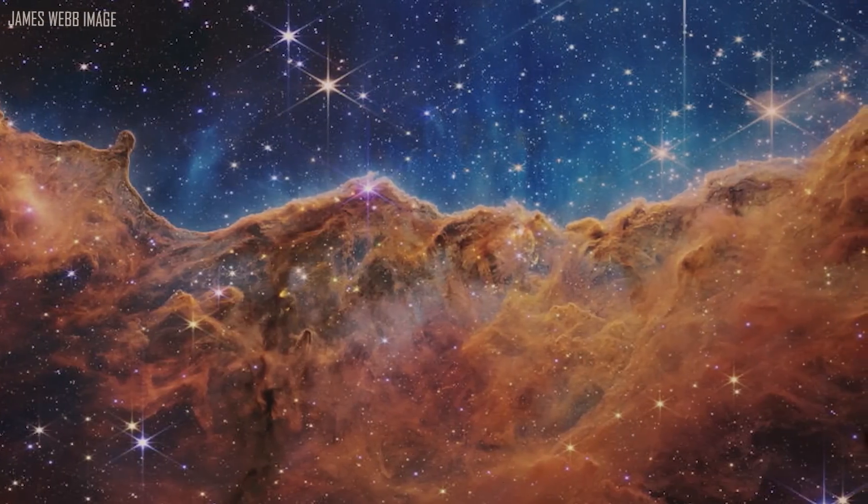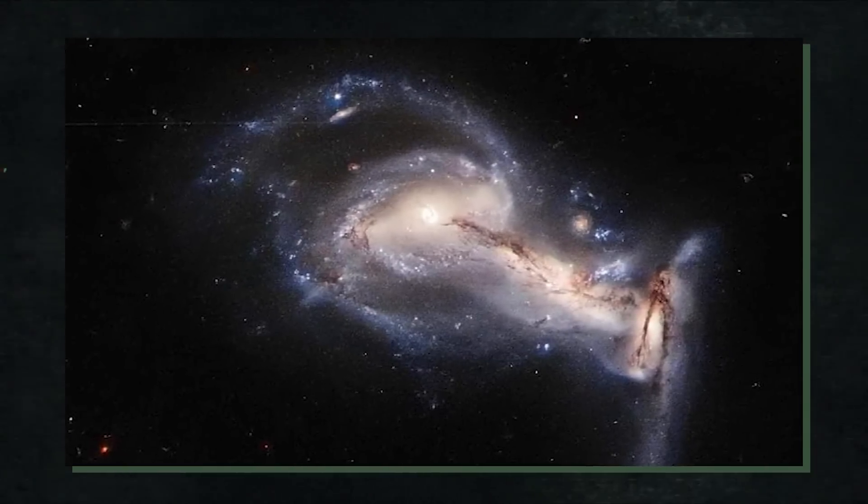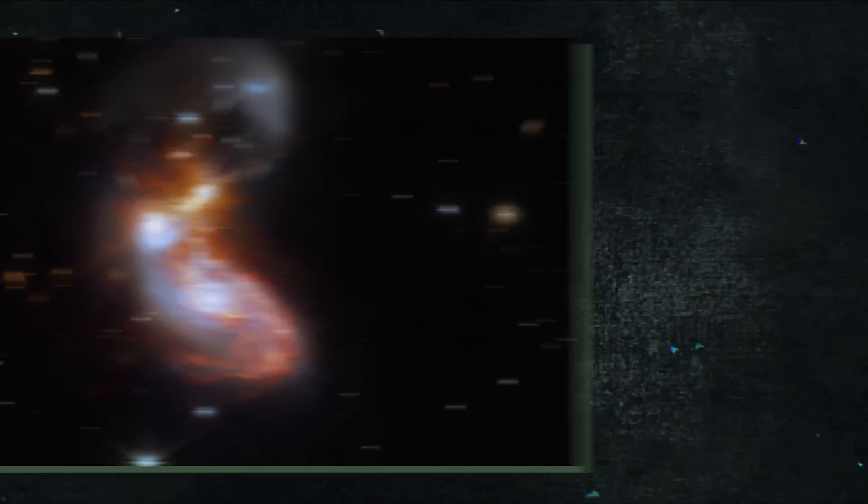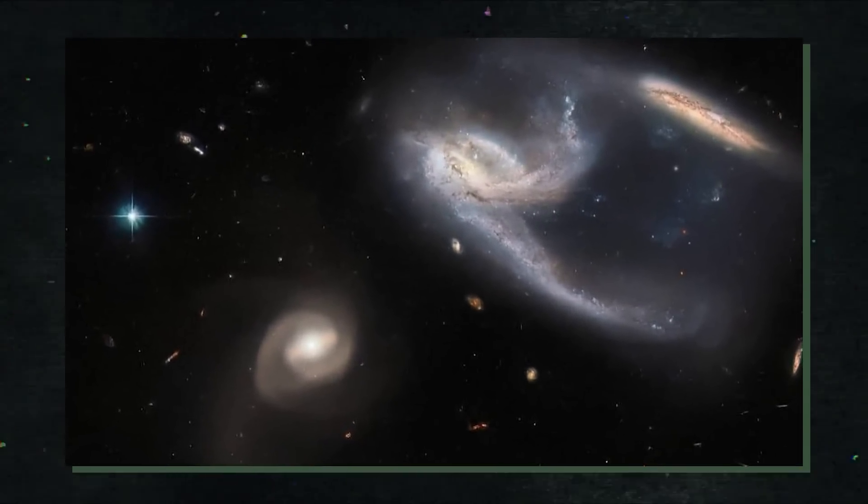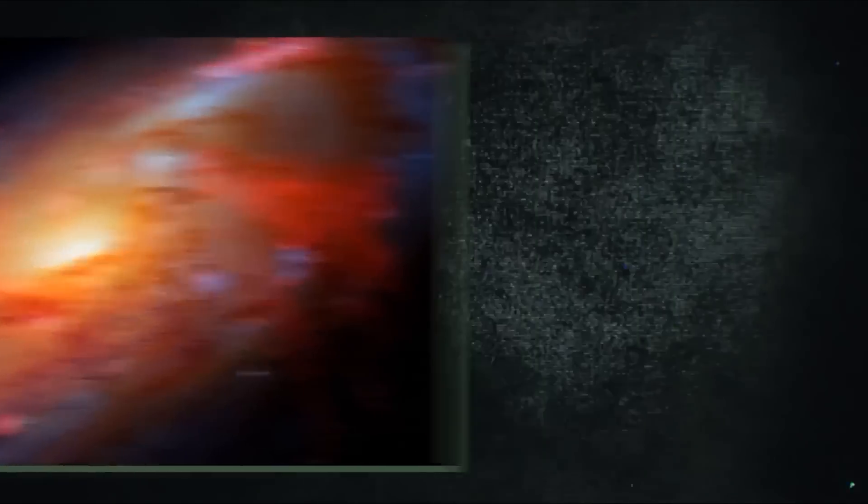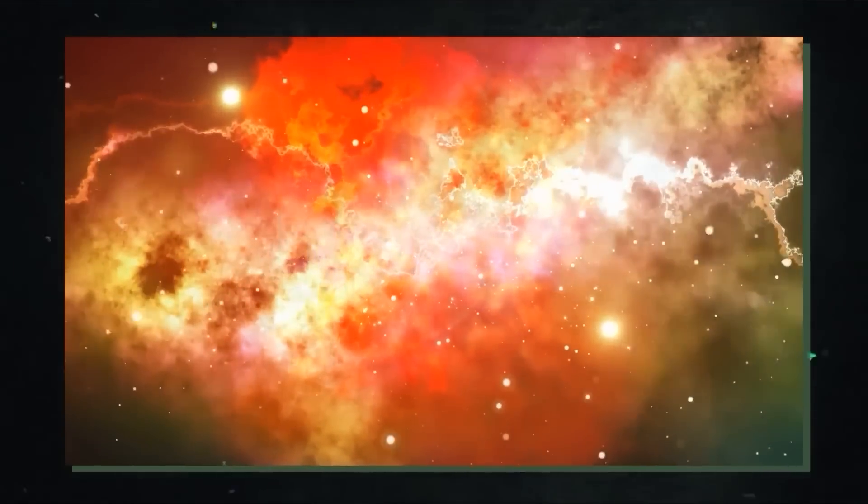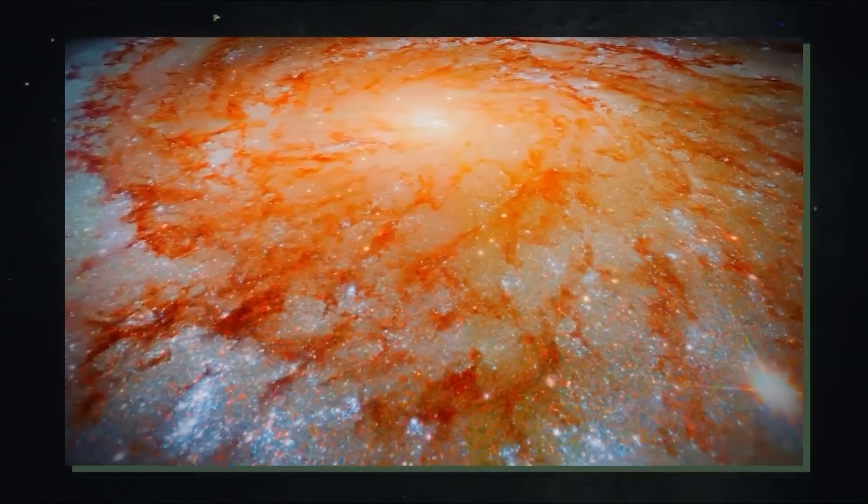The Dark Energy Spectroscopic Instrument, DESI, made these new observations of Andromeda and the inward movement of stars. It was designed to assess the impact of dark energy on the expansion of the universe. It collects optical spectra from tens of millions of objects, primarily galaxies and quasars, and then creates a 3D map of the findings.